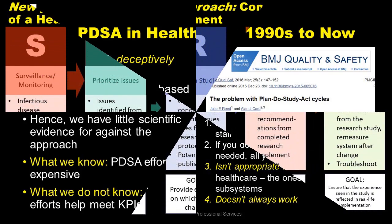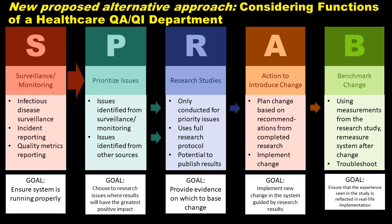This brings me to my new proposed alternative model — SPRAB — a different way of looking at QAQI in healthcare from a department perspective, considering the functions a healthcare QAQI department actually performs. The five functions are: S for surveillance and monitoring, P for prioritizing issues, R for research studies, A for action to introduce change, and B to benchmark change.